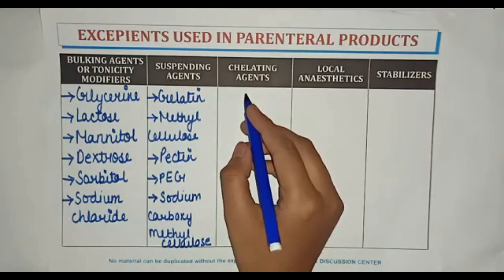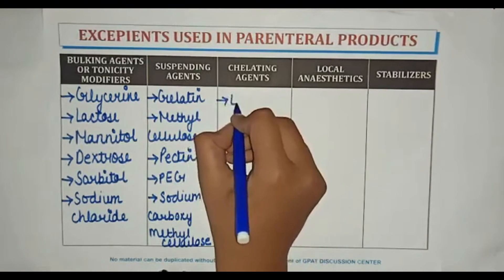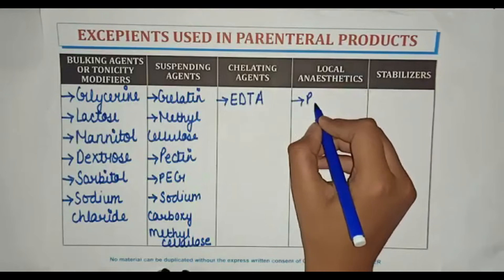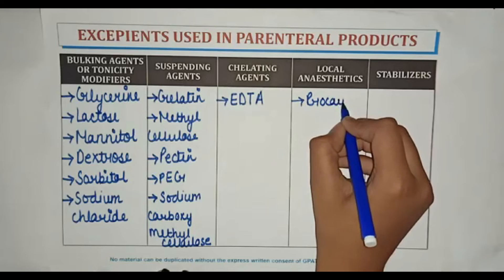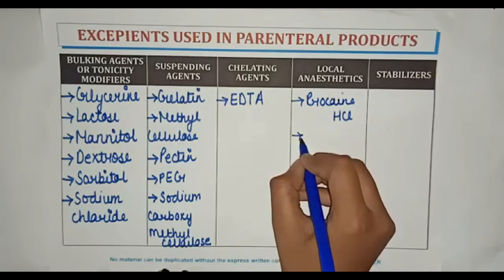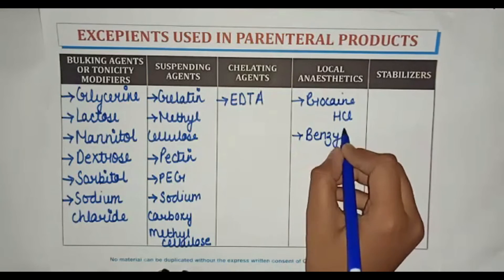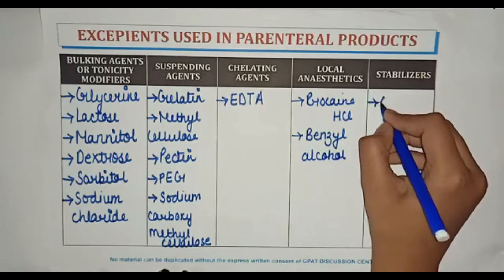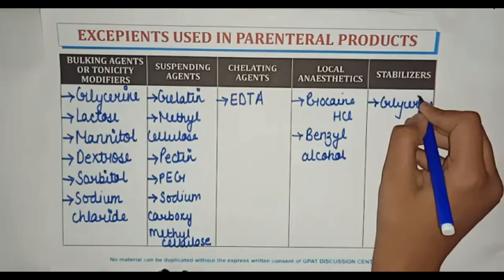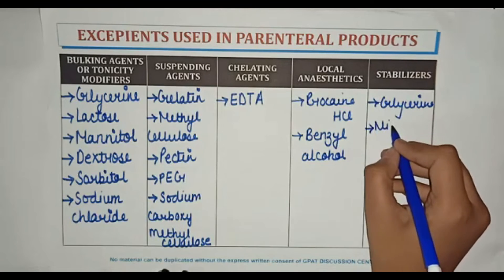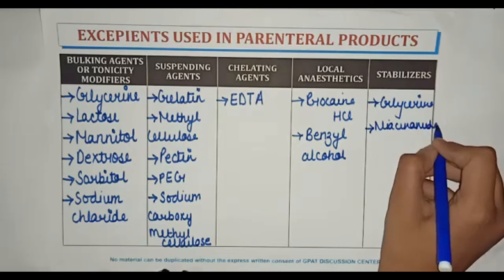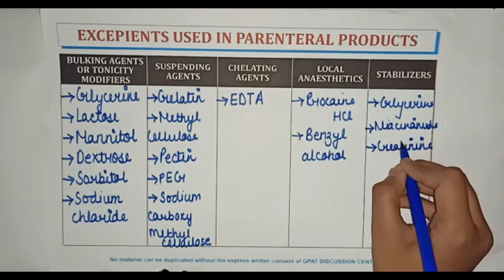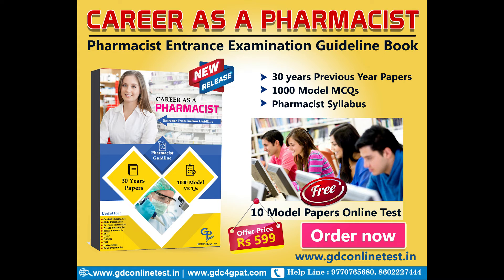Chelating agents include EDTA. Local anesthetics include procaine HCl and benzyl alcohol. Stabilizers include glycerin, niacinamide, and serotonin.